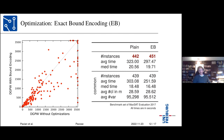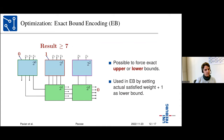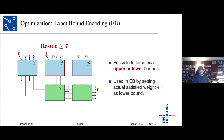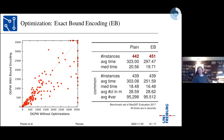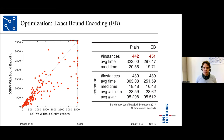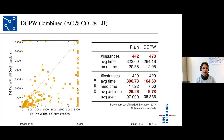Exact bound encoding means: after solving weight 7, adjust the tear variables TI to enforce the actual weight plus one—weight 8—in the next solver call. Combining all three optimizations (adder caching, cone of influence, exact bound encoding), 470 instances are solved instead of 442. Commonly solved instances drop to 429, losing 13 instances with all three techniques, but average and median solving time is halved.